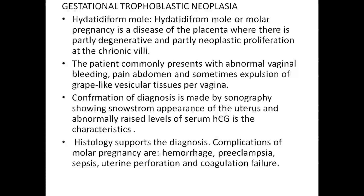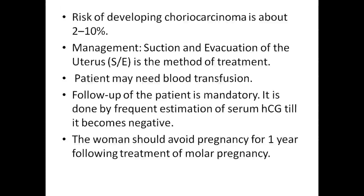In summary, gestational trophoblastic neoplasia is the most severe form of molar pregnancies — a disease of the placenta where there is partially degenerative and partially neoplastic proliferation of the chorionic villi. Patients commonly present with abnormal vaginal bleeding, abdominal pain, and sometimes expulsion of grape-like vesicles per vagina. Confirmation of diagnosis is made by ultrasonography showing snowstorm appearance of the uterus and abnormally raised serum HCG levels. Complications of molar pregnancy include hemorrhage, preeclampsia, sepsis, uterine perforation, and coagulation failure. Risk of developing choriocarcinoma is about 2 to 10%. Management is by suction evacuation; patient may need blood transfusion. Follow-up is mandatory, done by frequent estimation of serum HCG. Women should avoid pregnancy for one year after treatment of molar pregnancy with methotrexate.